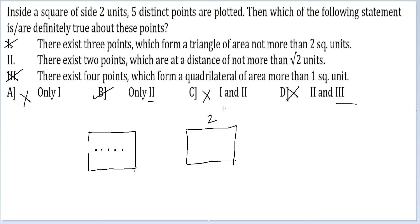So for the 5 points that I am creating, I would have to place these points as far away from each other as possible, so that the distance between any two of them is not less than root 2. So what I am choosing to do is, I am putting 4 points right at the corners.